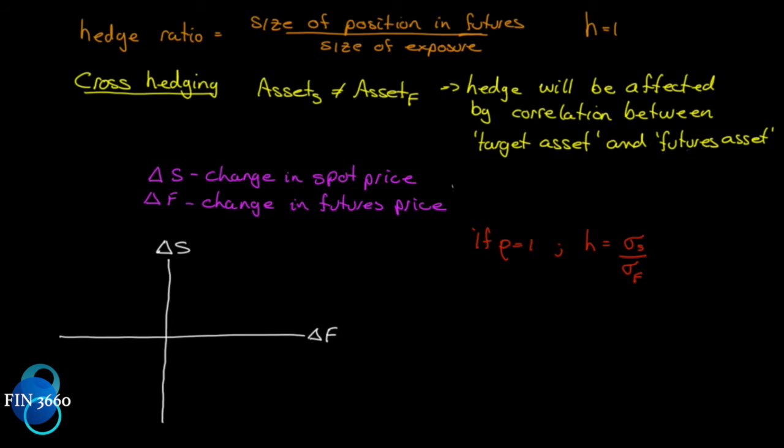However, not all companies have a policy of hedging 100% of their price risk. Farmers, for example, do not follow the 100% ratio. They'll hedge 60 to 70% of their exposure with the futures contract.